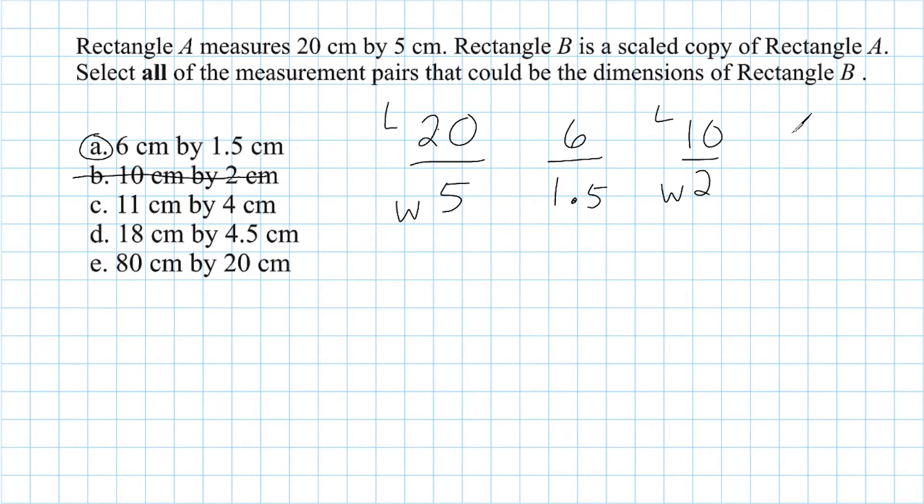For option C, we have a length of 11 and a width of 4. And we would say that this rectangle's length is not 4 times bigger than its width, because this would have to be 16 to be 4 times bigger than its width. So we can definitely not select option C.